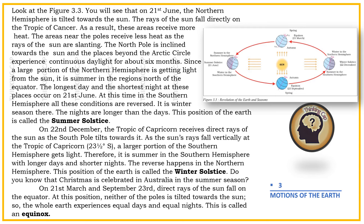Since a large portion of the Northern Hemisphere is getting light from the Sun, it is summer in the regions north of the equator. The longest day and the shortest night at these places occur on the 21st of June. At this time, in the Southern Hemisphere, all these conditions are reversed — it is winter season there, and the nights are longer than the days. This position of the Earth is called the Summer Solstice.